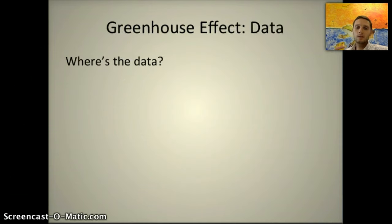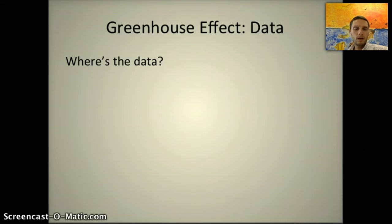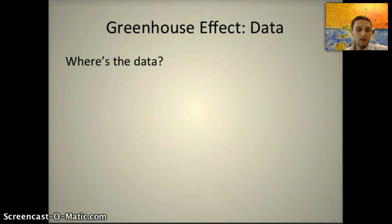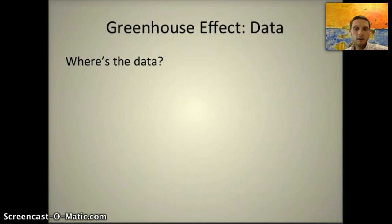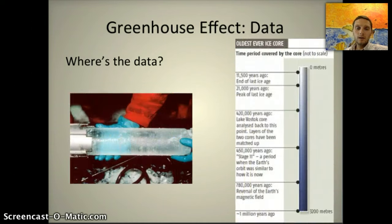You might be thinking: how do we know this? What is the data? Hopefully as a good scientist you're asking what proof backs this up. One of the ways we can measure the amount of CO2 is by taking samples currently in the atmosphere. We're also able to know how much CO2 was in the atmosphere previously, as well as past temperatures on the planet.